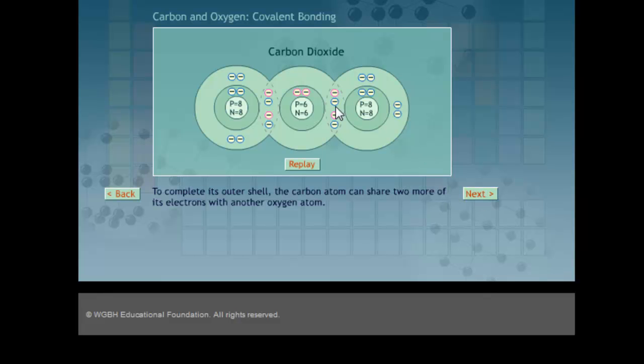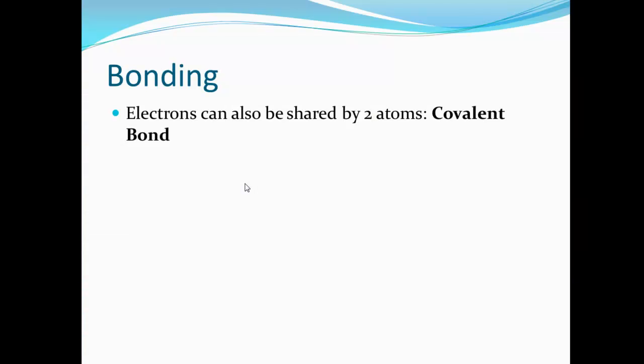Those electrons, if you're going to think of them as planets orbiting around, would be orbiting around both. Maybe not equally, but they would orbit around both. Or electrons, when they're shared by two atoms, it's a covalent bond.